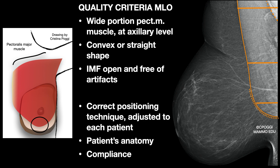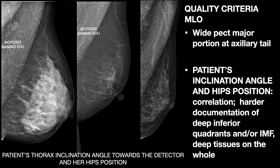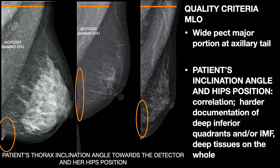This ideal appearance is not always achievable. We have to consider that the positioning technique must be adjusted and tailored for every single patient, depending on her anatomy and compliance. To obtain a wide muscle at axillary level is important because the radiologist can study the complete armpit, but it shouldn't come at the expense of inferior tissue documentation. This happens when the patient is made to bend down towards the detector — hips go backwards naturally, and you lose the IMF, the posterior inferior quadrant, and sometimes even the middle deep tissue too, which is unacceptable.